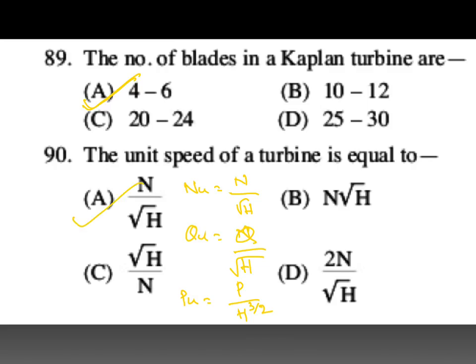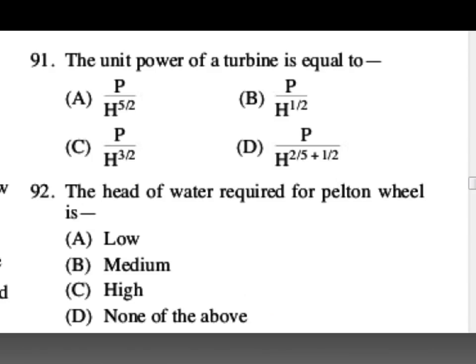A is your answer for unit speed. For unit power, already discussed: P divided by H^(3/2). Head of water for Pelton wheel: Pelton wheel is tangential flow impulse turbine, high head, greater than 300 meters. Low head is Kaplan turbine, medium head is Francis turbine, high head is Pelton wheel.